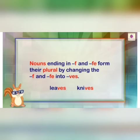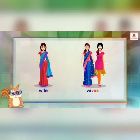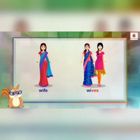Similarly, knife ends in FE — F-E — so we put VES and it becomes knives. Likewise, wife ends in FE, so we replace FE with VES and the plural form becomes wives.